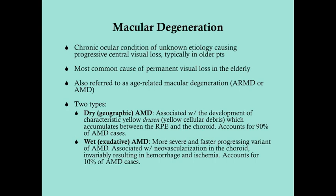There are two distinct types of AMD that you need to be aware of because they affect treatment. The more common one is dry AMD, also called geographic AMD. It's associated with the development of characteristic yellow nodules called drusen, which are cholesterol-based material and cellular debris that accumulate between the retinal pigment epithelium and the underlying choroid.